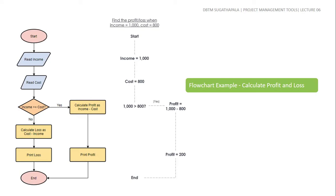If we make the decision and income is greater than cost, we print a profit result. Otherwise, we calculate the loss as cost minus income, and print the loss.